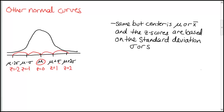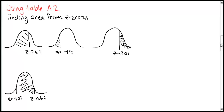We're going to address non-standard curves in the next video. So there are two components we want to be able to do in this section. The first is finding the area underneath our curve using a z-score. Here we're told our z-score is 0.67 — just to the right of the center, since the center would be at zero — and we want to know what this area would be. I really want you to draw these when doing homework problems so you can have an estimate.